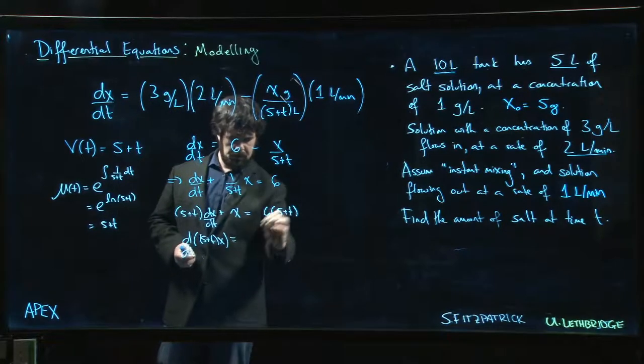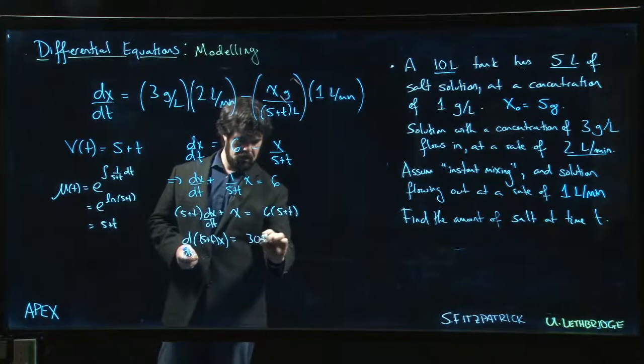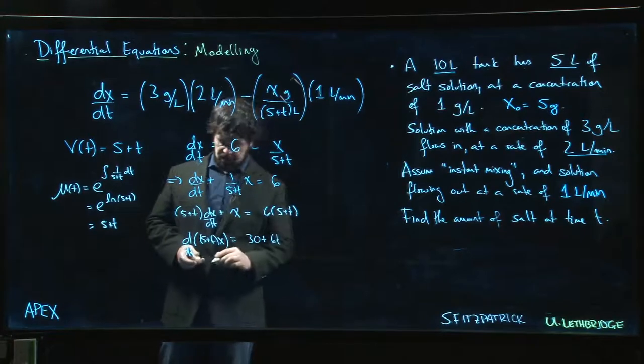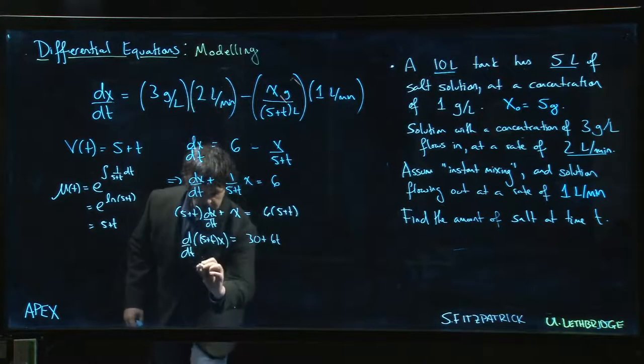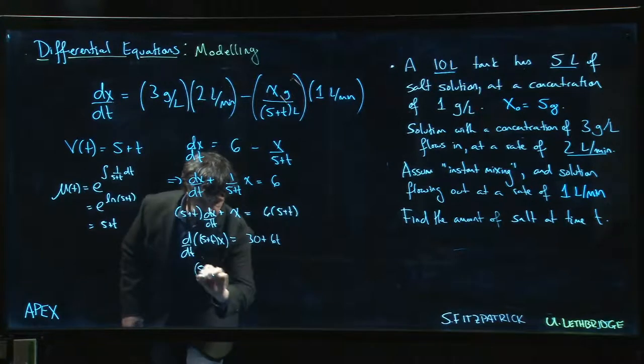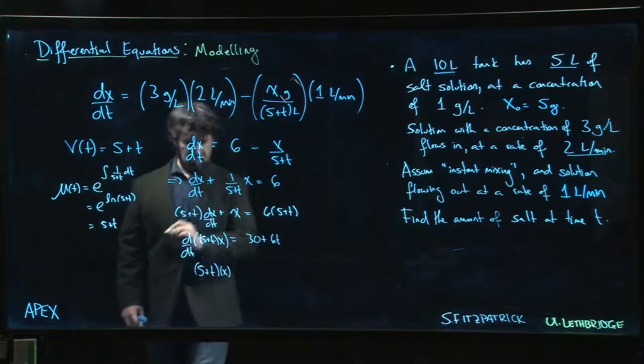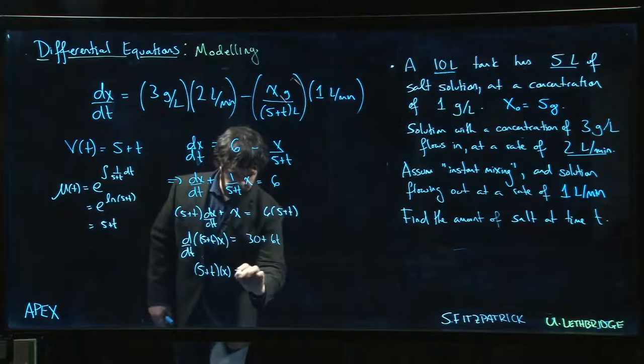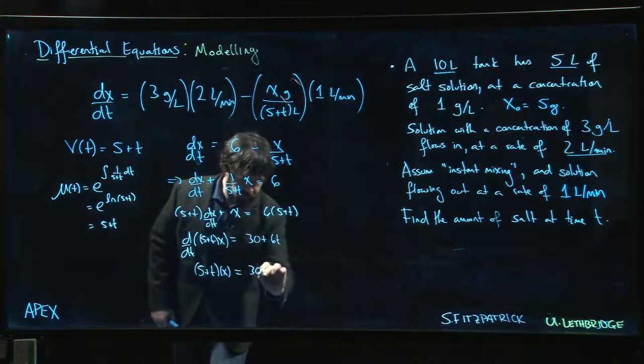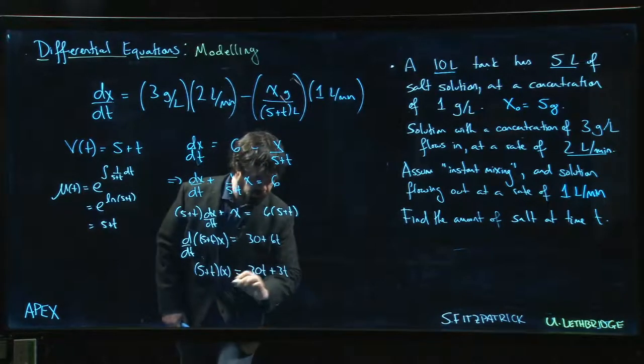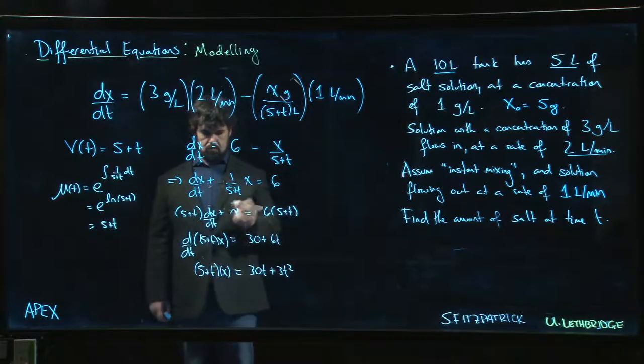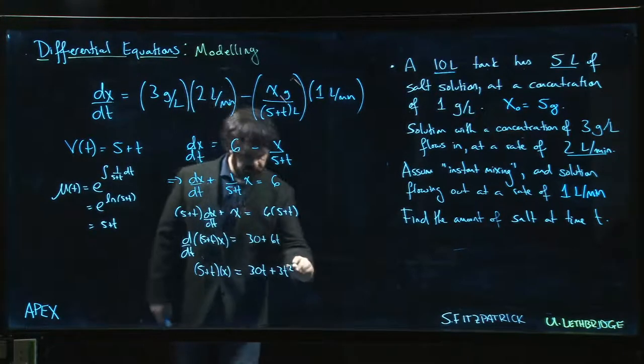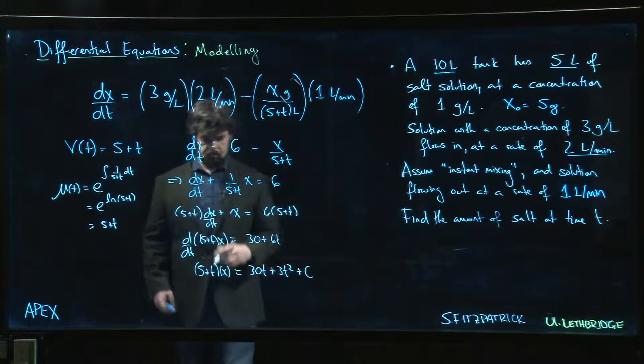That's going to be equal to 30 plus 6t. So now we integrate: (5 + t) times x equals 30t plus 3t² plus possibly some constant.